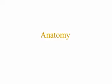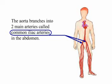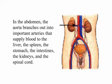Anatomy. The heart pumps blood into a large artery known as the aorta. The aorta branches into two main arteries called common iliac arteries in the abdomen. Each common iliac artery then divides into a branch that goes into the pelvis and a branch that goes into the leg. In the abdomen, the aorta branches out into important arteries that supply blood to the liver, the spleen, the stomach, the intestines, the kidneys, and the spinal cord.